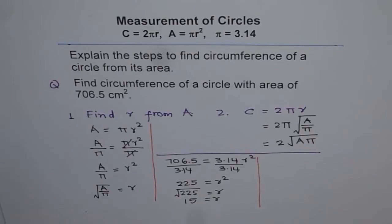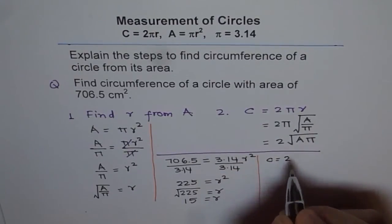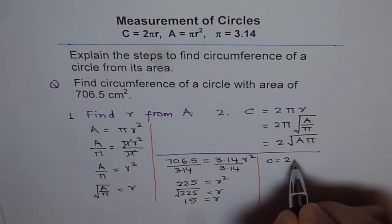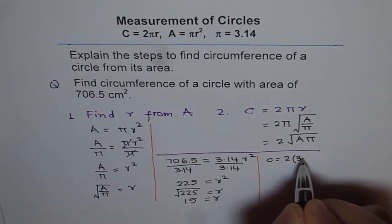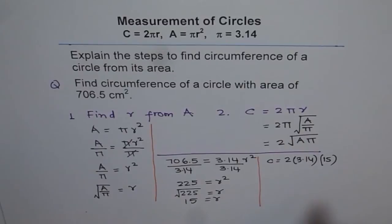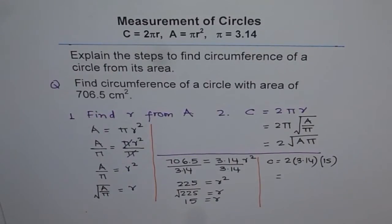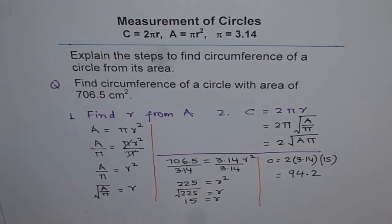Now to find the circumference, we use the formula: circumference equals 2πr. The value of π is 3.14 and the radius we found is 15. So we plug in 15 and calculate: 2 times 3.14 times 15 equals 94.2.